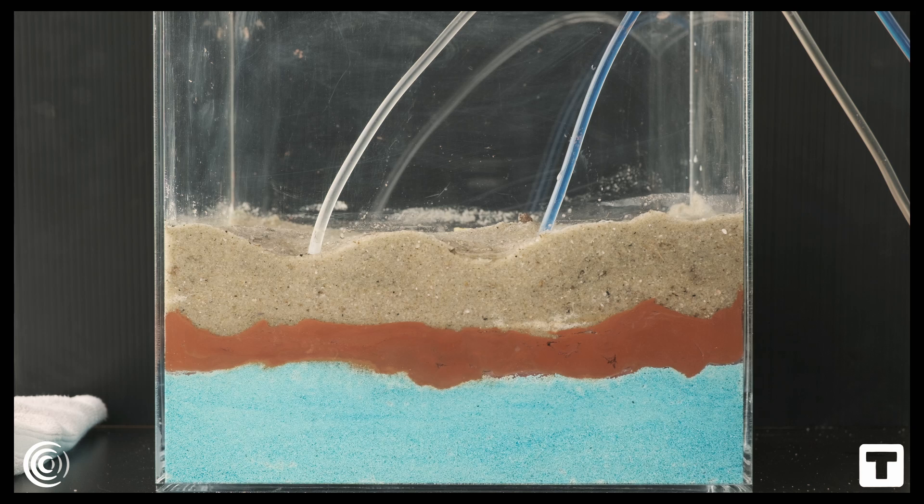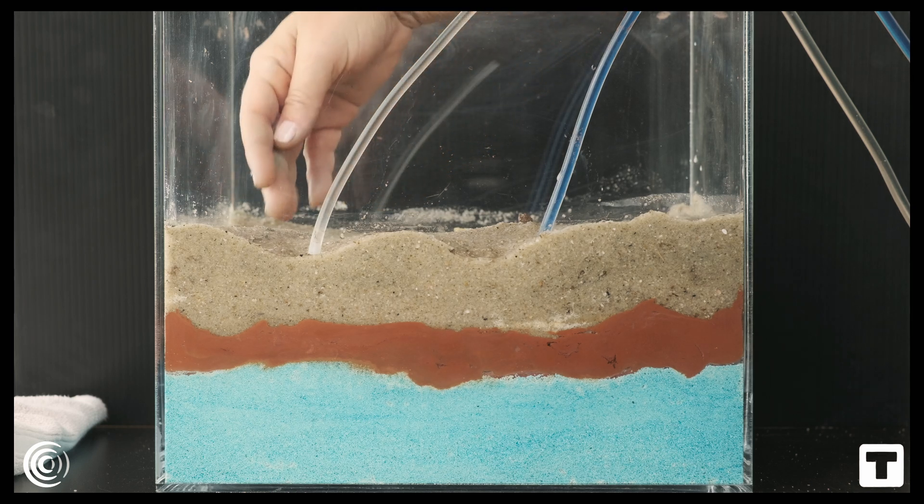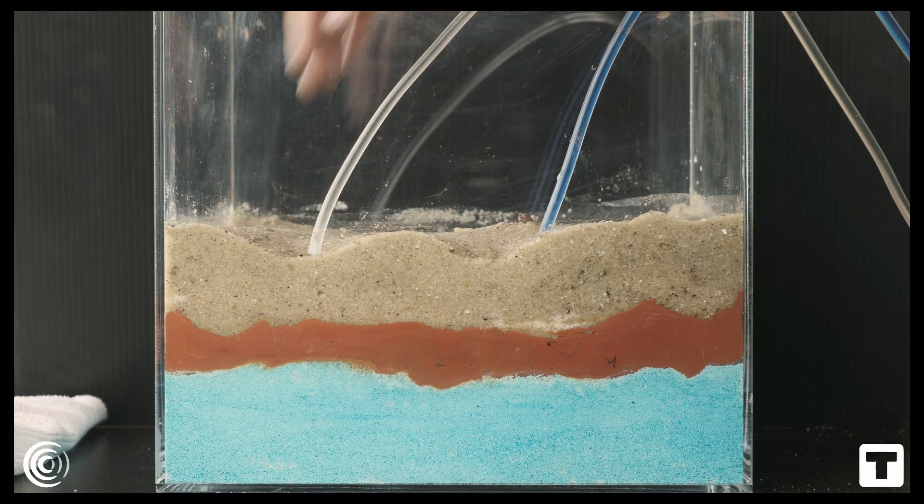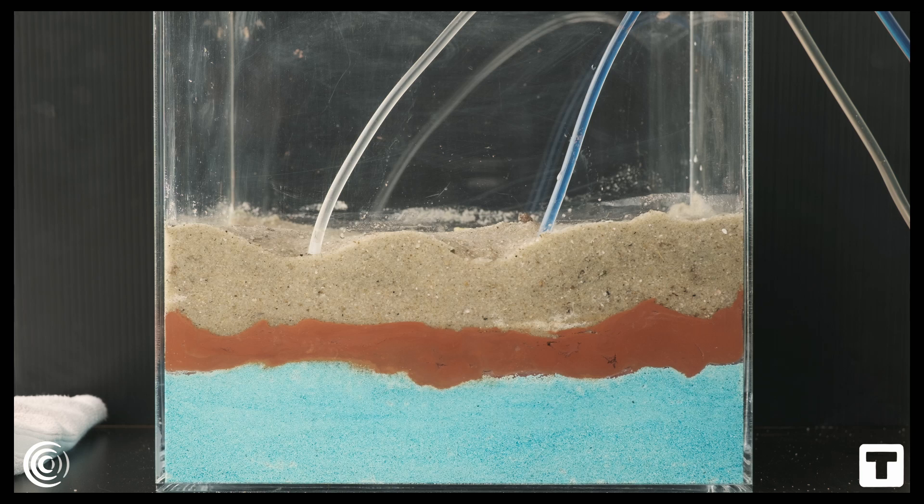In confined aquifers, the cone of depression is not a change in the water level itself. Instead, it is a reduction in the pressure head surrounding the pumped well. Remember that artesian well we showed you? As the water is removed from that well, the pressure decreases at that spot in the aquifer and a cone shape area is formed around it.